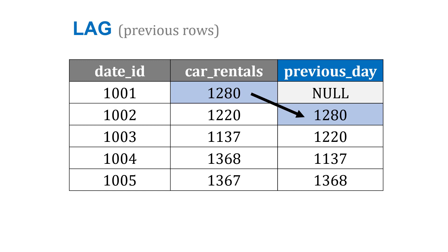Lag is going to be for previous days. Notice how in the first day in the results, there's no previous day, so you see null there. But in the second day, I see in the second field 1220 — that was the current day's rentals — but I also see next to it the previous day's rentals, so I can compare the two.